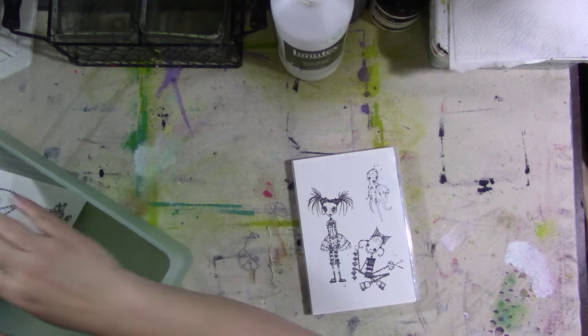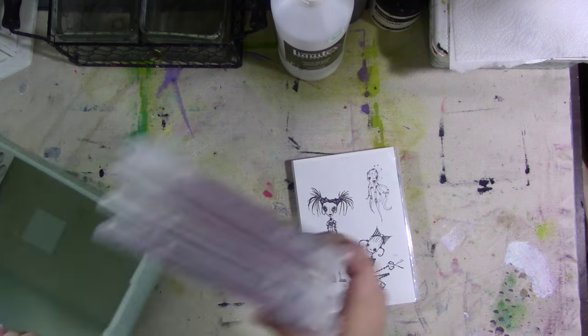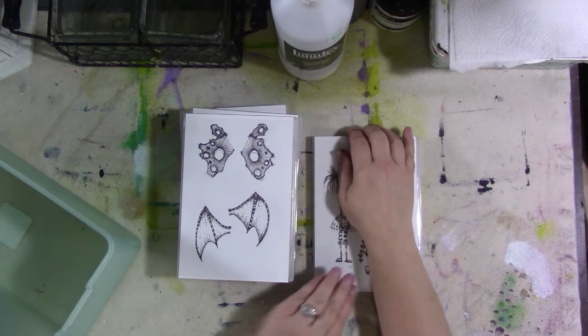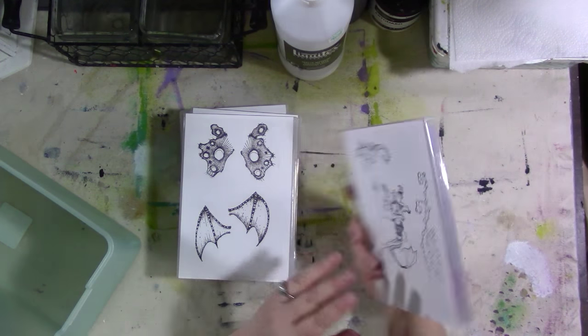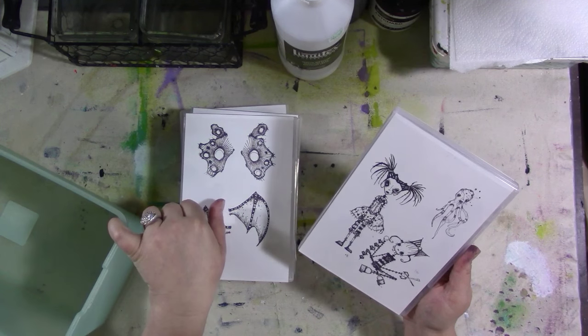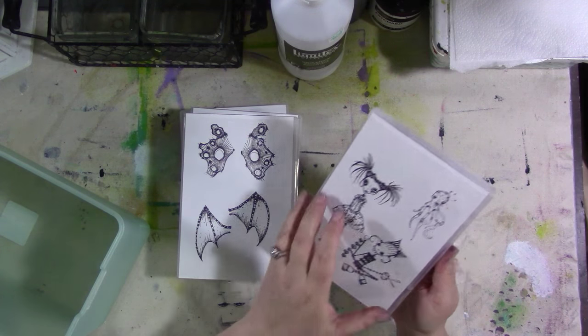That being said, I did unmount all of my Stamp Boutique stamps and put them in these blank DVD cases, which I talk about in the Viva Las Vegas stamps video. I will post links for where to get the DVD cases and the bin that I'm storing them in my art room in the description below.